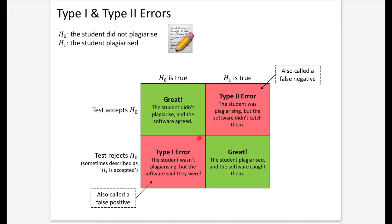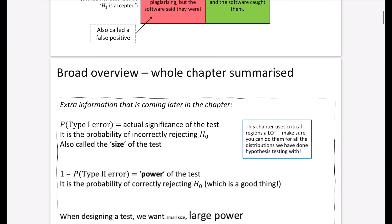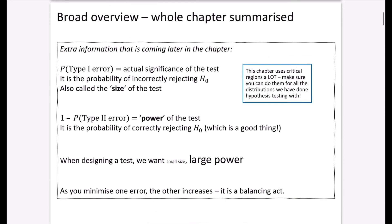We're going to find probabilities of these type 1 and type 2 errors. The probability of a type 1 error is the same as the actual significance of the test, because it's the probability of incorrectly rejecting H0. It is also called the size of the test. So the probability of a type 1 error and the size are interchangeable — you're going to see those two things used in conjunction as we get further into this chapter.